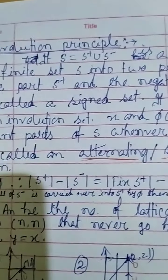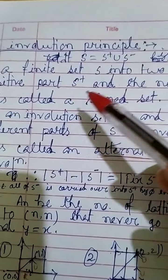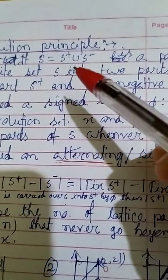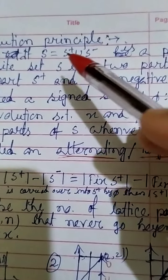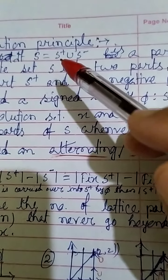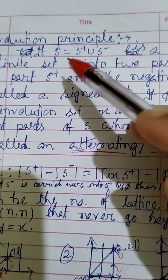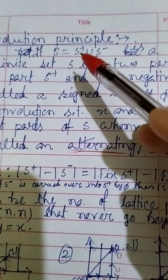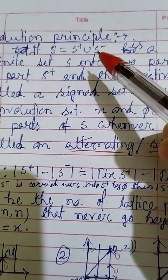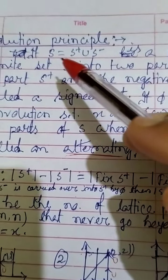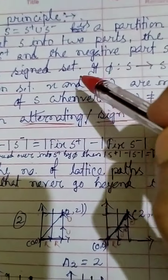This set S is called a sign set if we have these two parts — S-positive and S-negative — which are the partitioned sets of S.